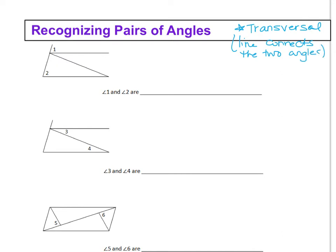All right, so if you look at this first figure right here, we have angle one and angle two. There are four lines, and there's one of those that connects the two angles — it goes from angle one to angle two. That line that connects the two angles is your transversal. Sometimes it's helpful to extend your line a little bit longer than the figure.